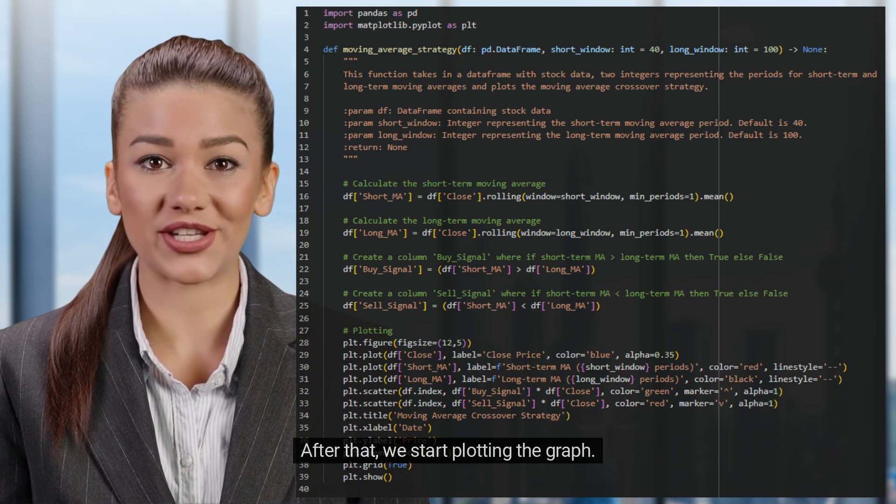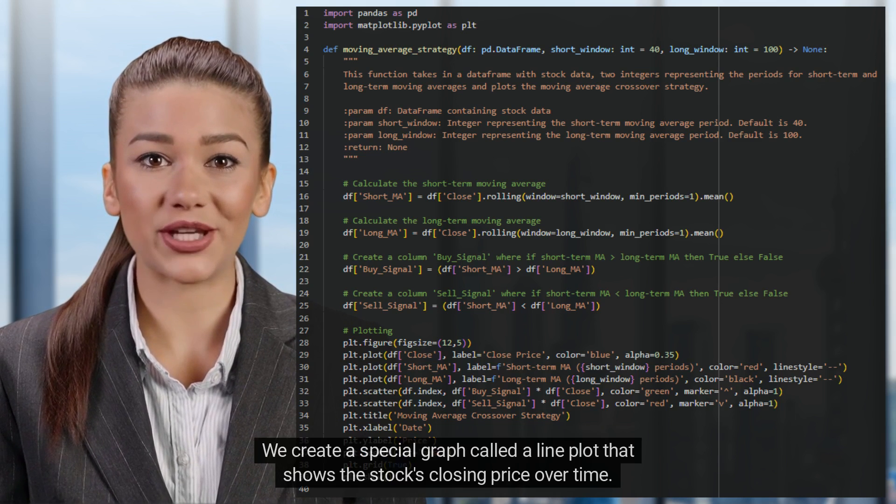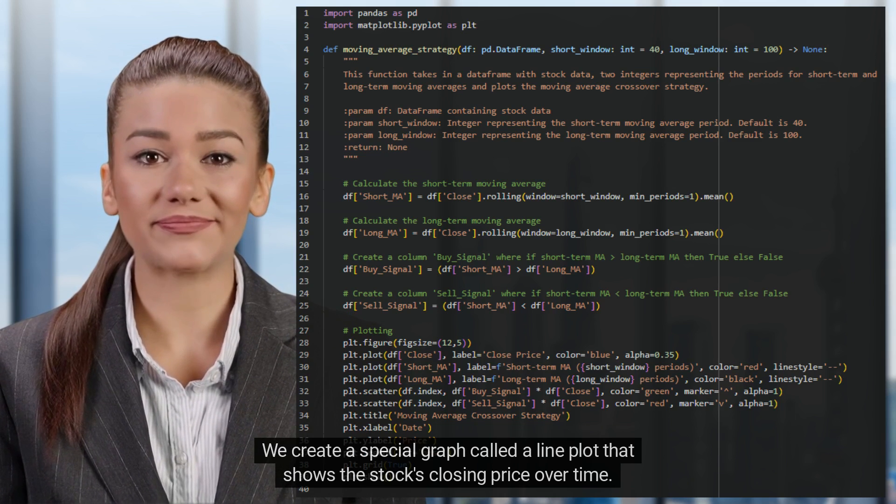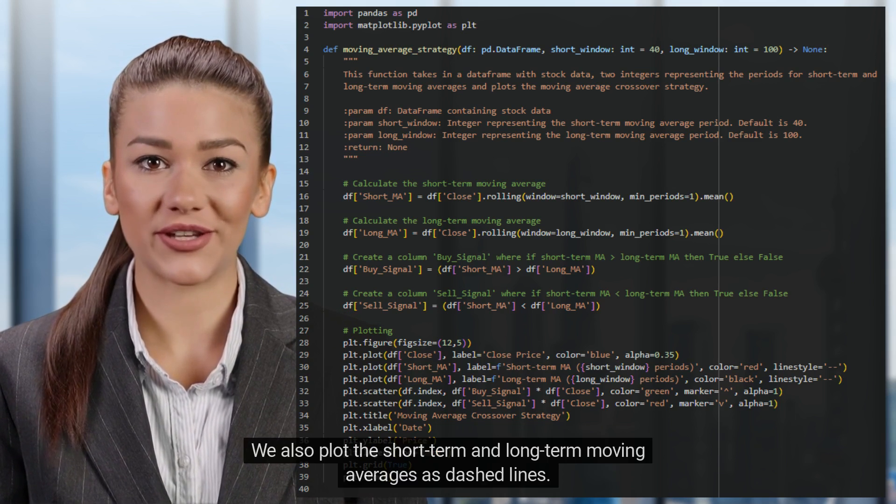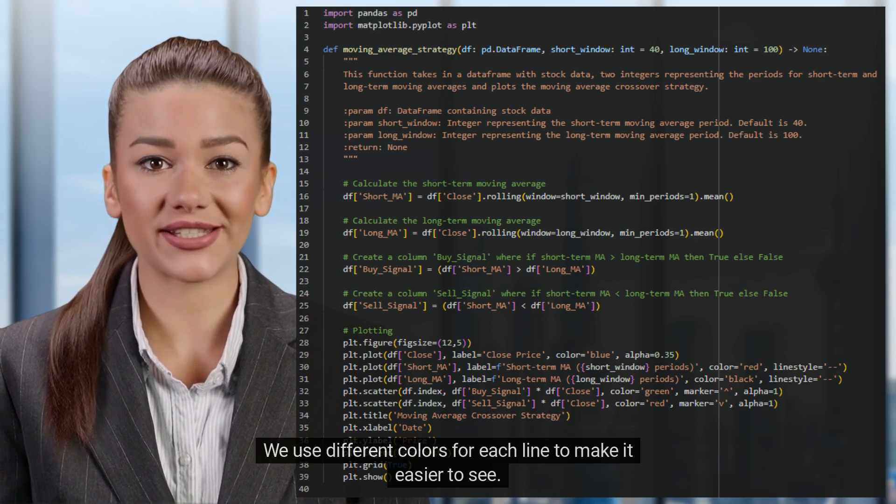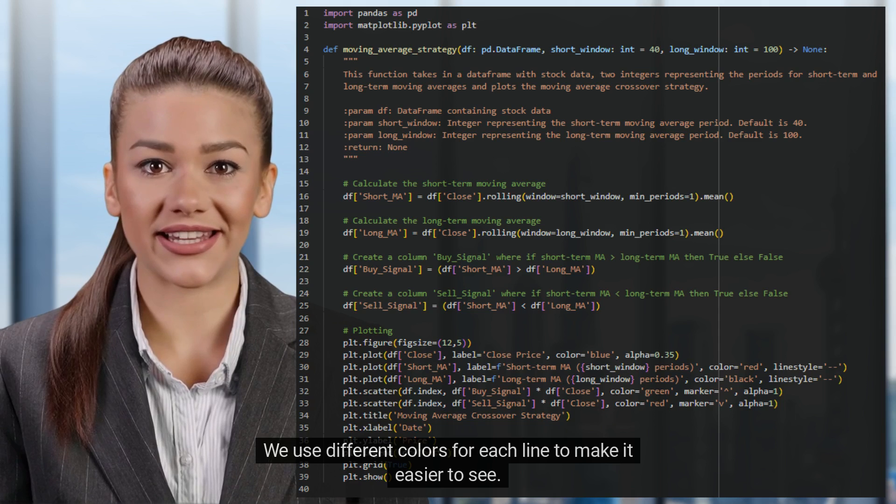After that, we start plotting the graph. We create a line plot that shows the stock's closing price over time. We also plot the short-term and long-term moving averages as dashed lines. We use different colors for each line to make it easier to see.